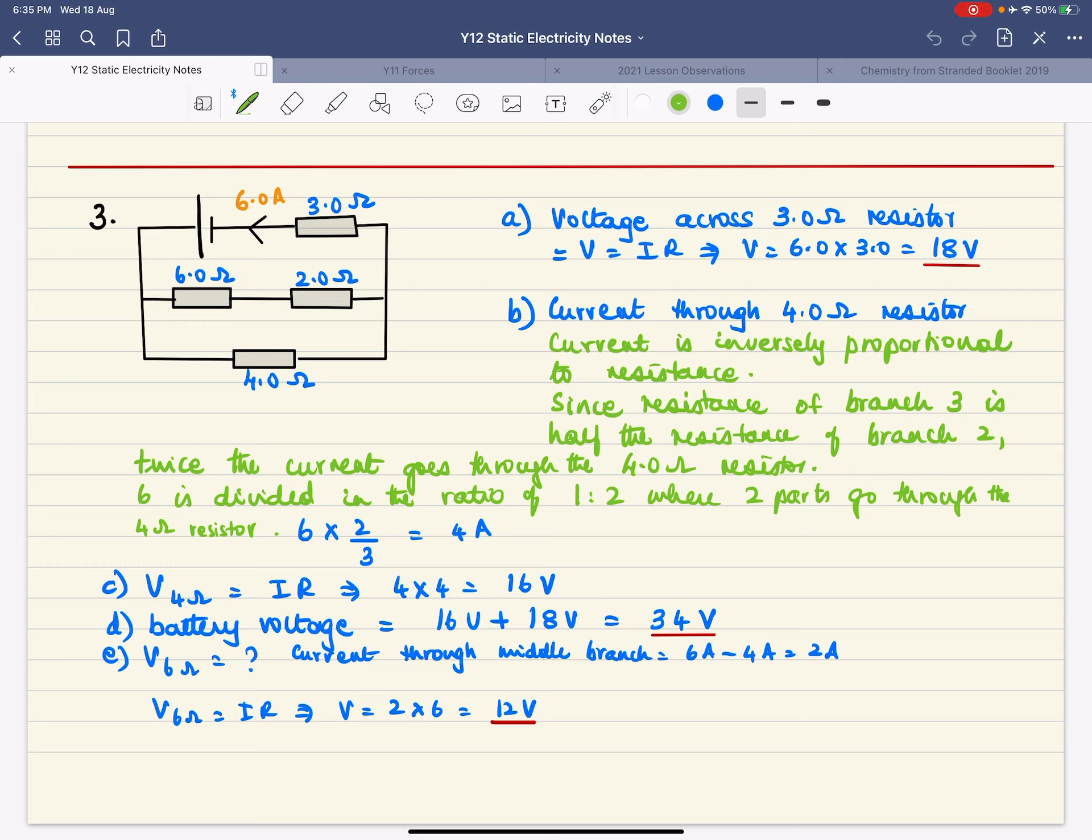So here's the circuit for question 3 and the first thing is calculate the voltage across the 3 ohm resistor. We don't know the battery voltage here. We do know the current so voltage is current times resistance so you get 6 times 3 which is 18 volts.